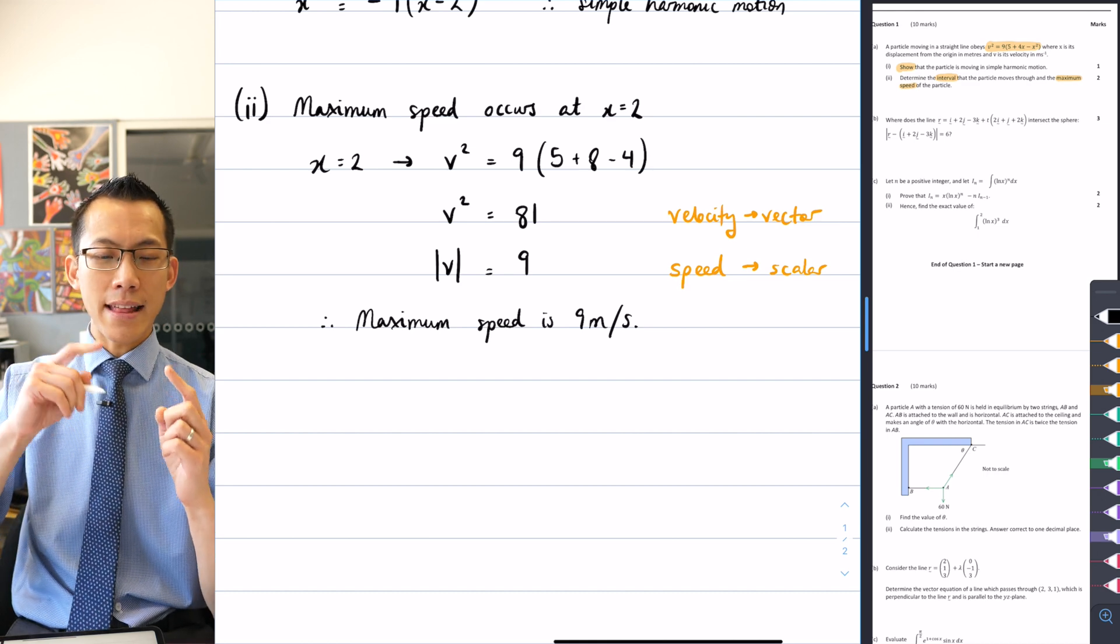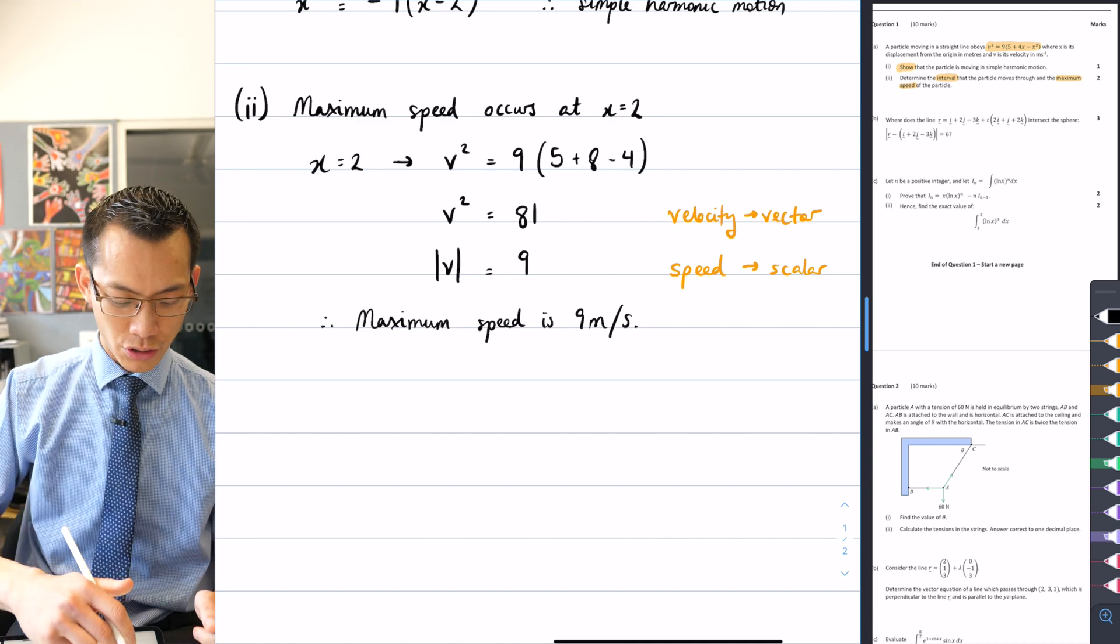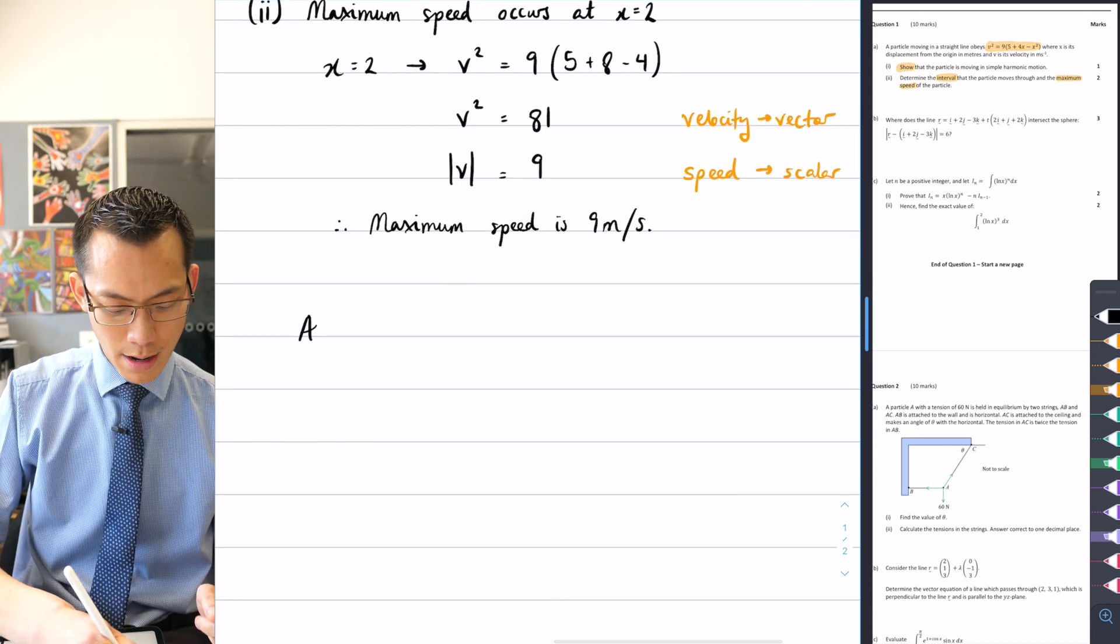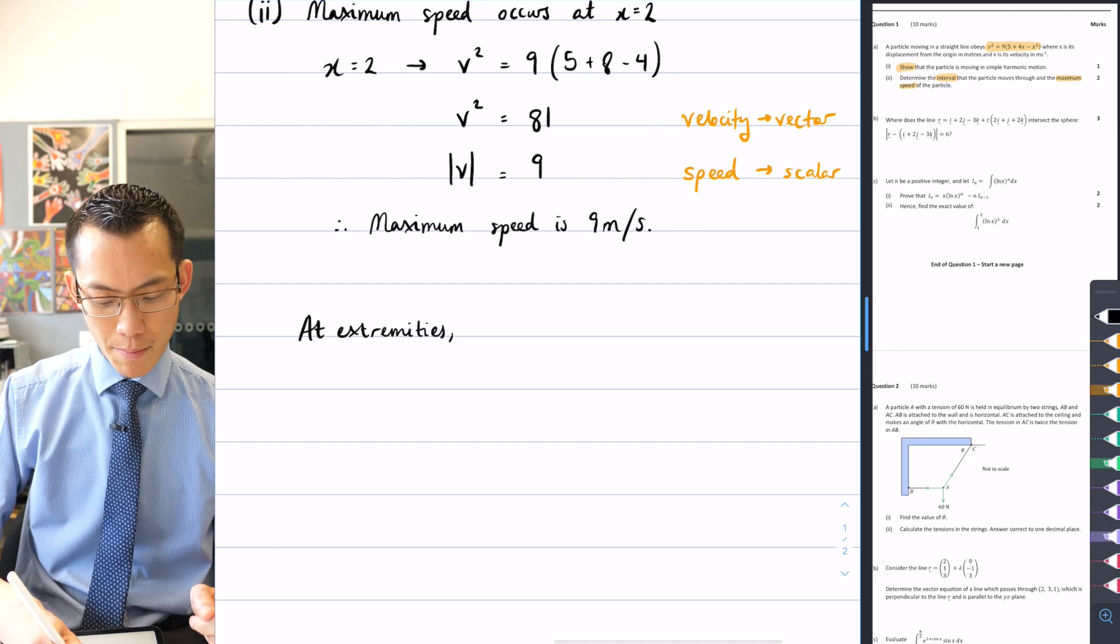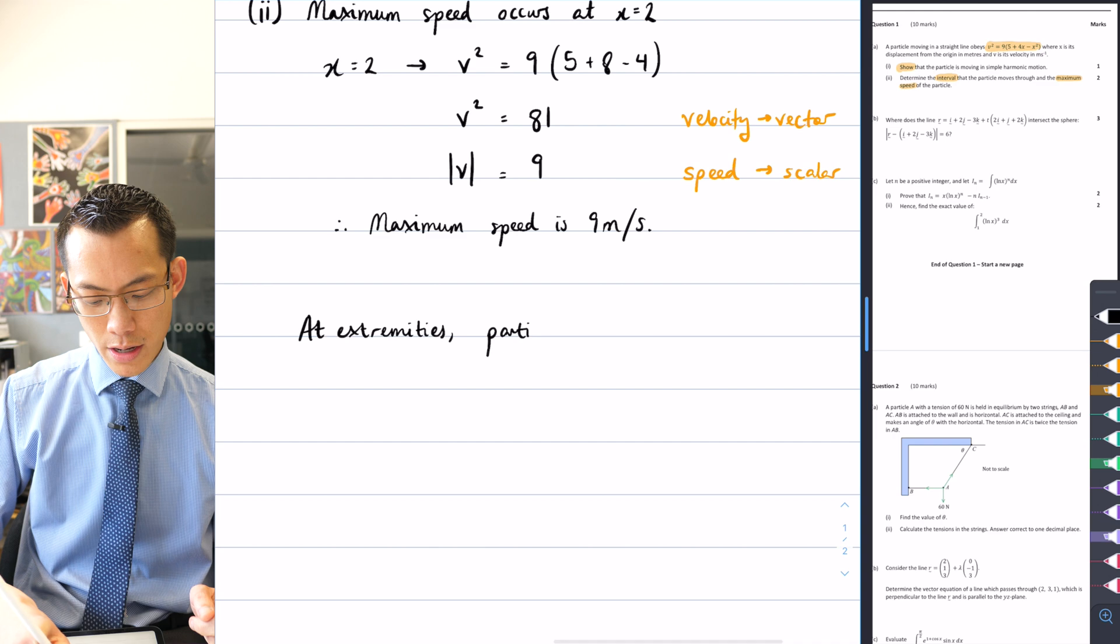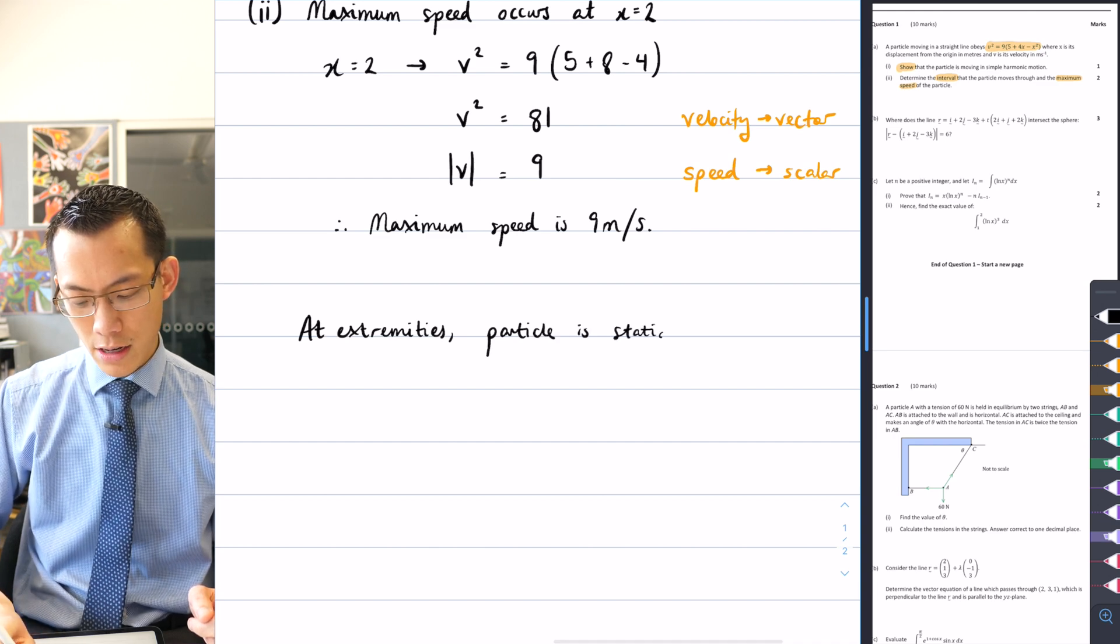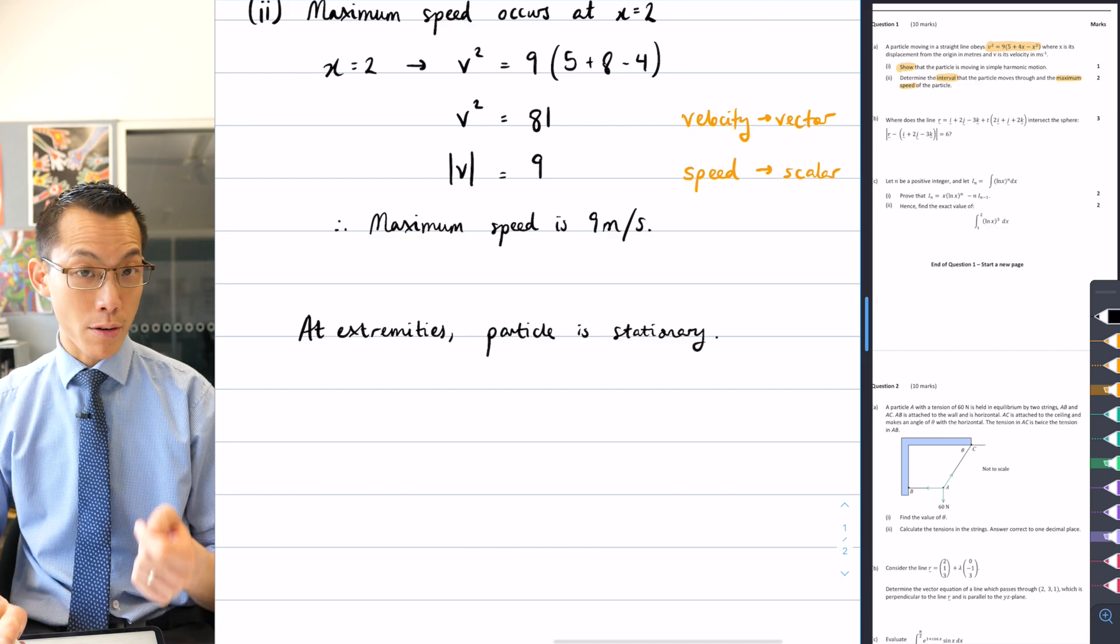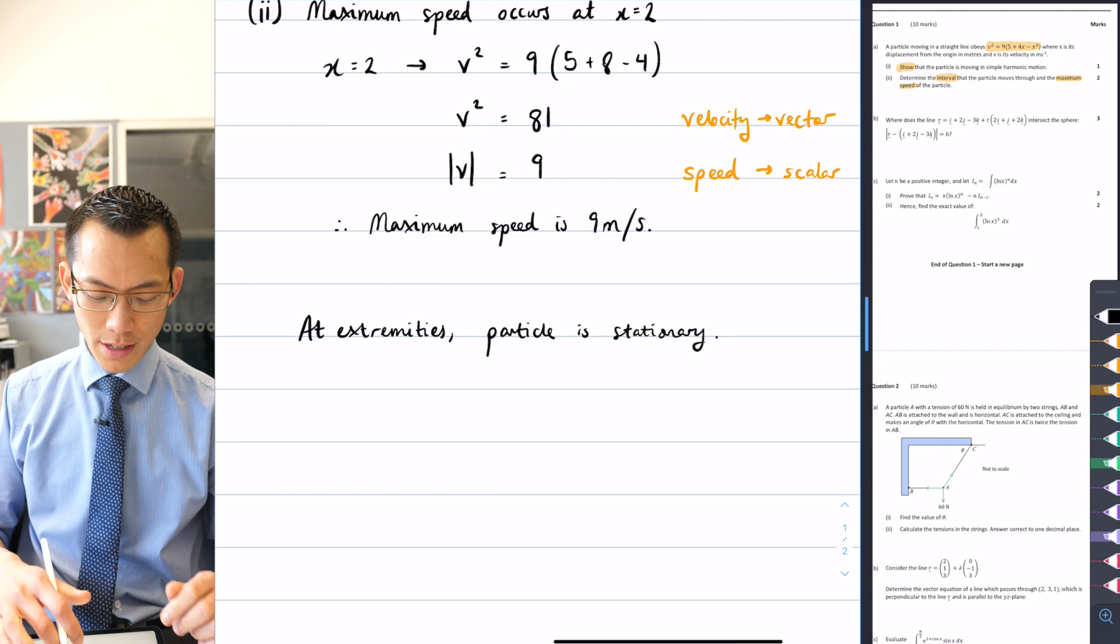So I can say, at the extremities, the particle is stationary. In other words, V is equal to zero. And I again can go back to the original equation provided to me and just solve that. In fact, I can even go less than solving.